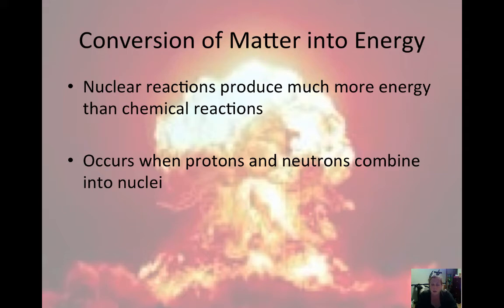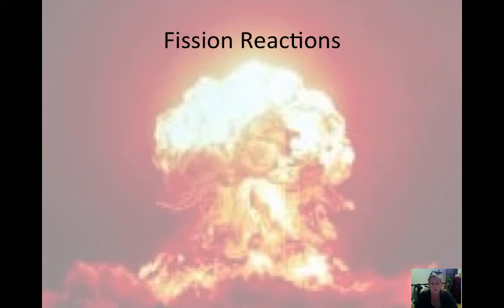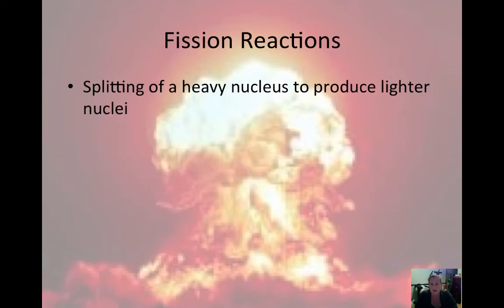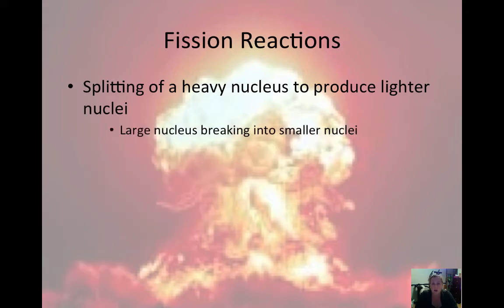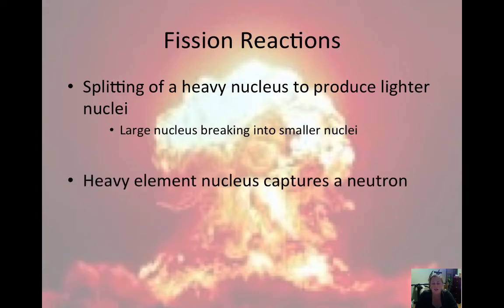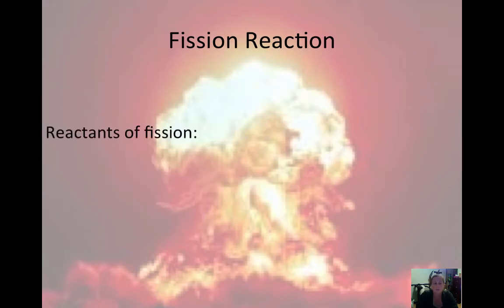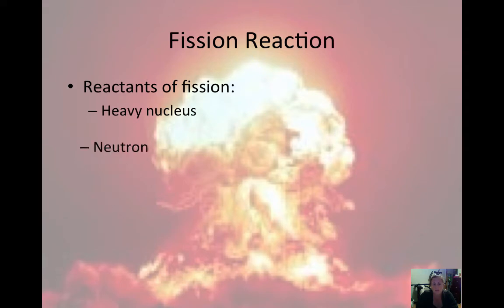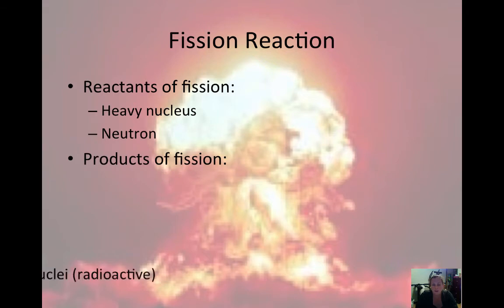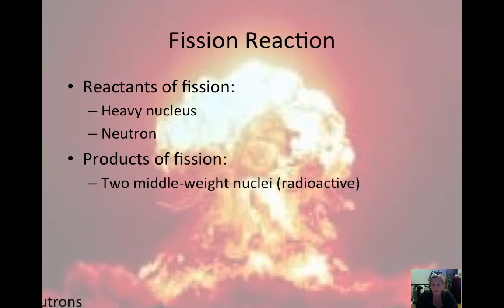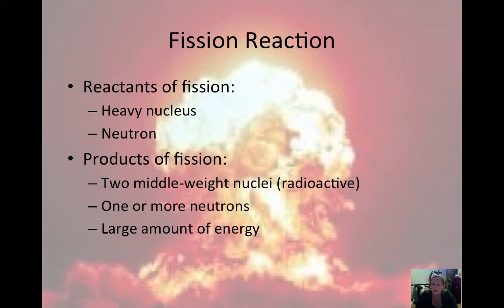Nuclear reactions occur when protons and neutrons combine into nuclei. The first type we'll talk about are fission reactions. Fission is all about splitting a nucleus — a heavy nucleus is split to produce lighter nuclei. The large nucleus breaks into smaller nuclei, and the heavy element's nucleus captures a neutron, making the nucleus unstable. The reactants of fission are the heavy nucleus and a neutron, and the products are two middleweight nuclei that are radioactive, one or more neutrons, and a large amount of energy.